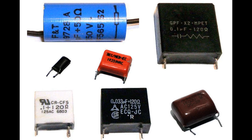PPS film capacitors use a polyphenylene sulfide (PPS) film as the dielectric material. They offer excellent temperature stability, high reliability, and are suitable for demanding applications. PPS capacitors are used in automotive electronics, high-temperature environments, and other applications that require stability under harsh conditions. PET film capacitors use a polyethylene terephthalate (PET) film as the dielectric material, providing good electrical properties, stability, and suitability for general-purpose applications such as filtering, bypassing, and coupling.